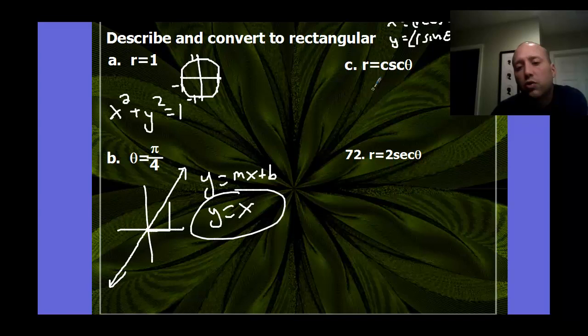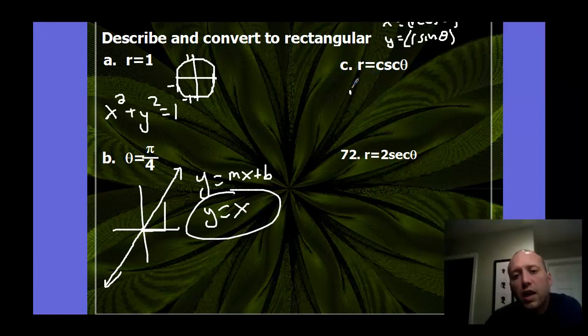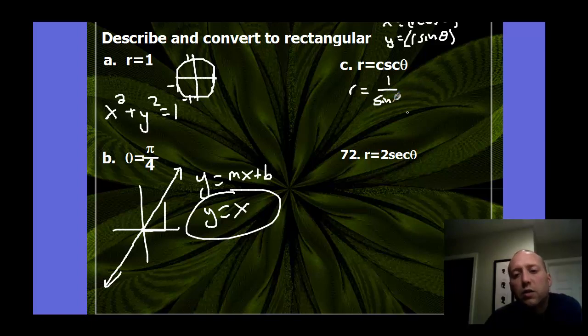If you're given r equals cosecant theta, not quite as easy to write into rectangular. But we need to realize that x equals r cosine theta, and y equals r sine theta. If we can then write or find that r cosine theta or r sine theta within our equation, then we can substitute x or y in for those. So that we can get to a rectangular equation. Well, cosecant is the same thing as 1 over sine theta. So I can multiply both sides by sine to get r times sine theta equals 1. Now, I know r sine theta is y, so this is just y equals 1. There is the rectangular form. That will be a horizontal line.